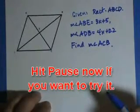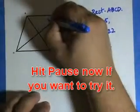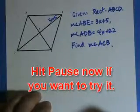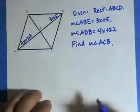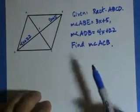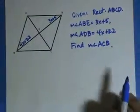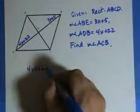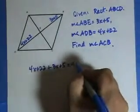Okay? So, Measure of Angle ABE is 3x plus 5. So, 3x plus 5 is in there. Measure of Angle ADB, 4x plus 22, that's in here. So, what's the relationship between these two angles? These two angles are complementary. So that means they add up to 90. So our equation is 4x plus 22 plus 3x plus 5 equals 90.